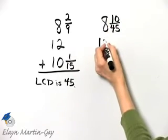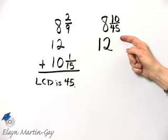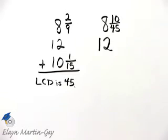And then I have 12. If you need to, you can write that as 12 and 0 over 45, but it's simply 12.